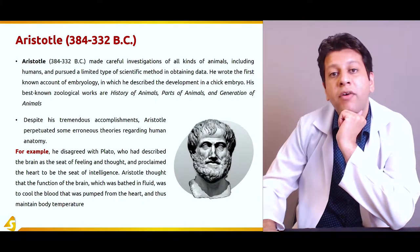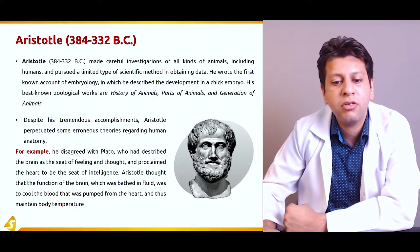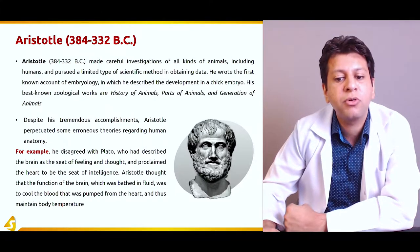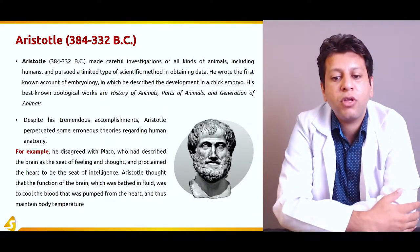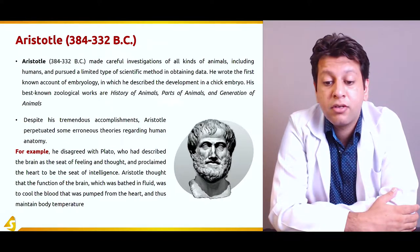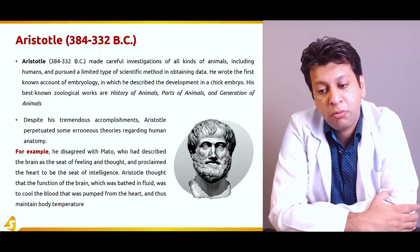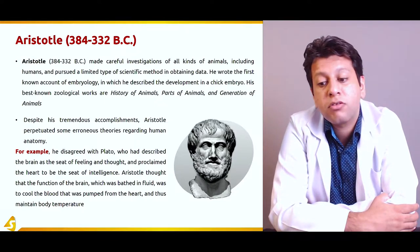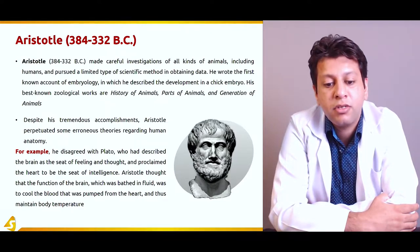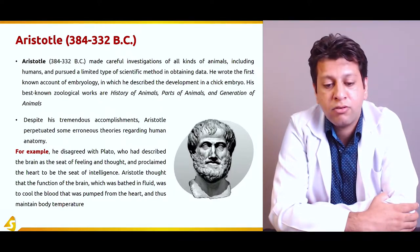Aristotle came after Plato and made careful investigations of all kinds of animals including humans, pursuing a limited type of scientific method in obtaining data. He wrote the first account of embryology, describing the development of a chick embryo — note, not a human embryo. His best-known zoological works, including the History of Animals, Parts of Animals, and Generation of Animals, are still available in some library archives.